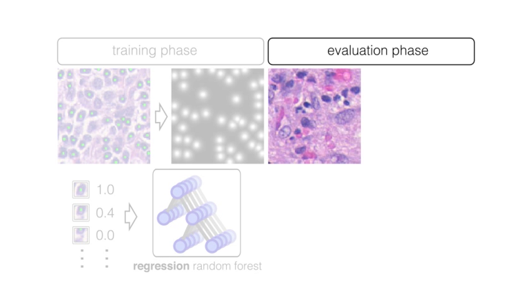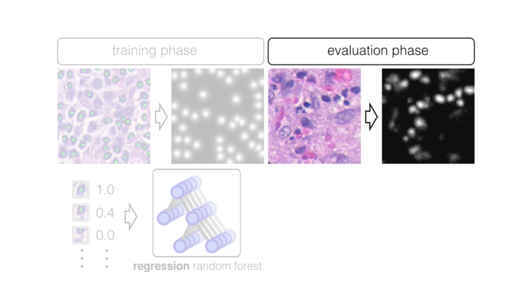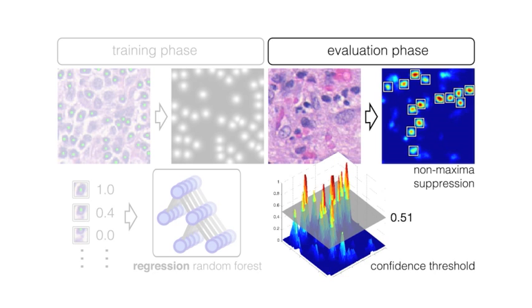In the evaluation phase, the proximity score map is predicted for unseen images using a sliding window. Subsequently, non-maxima suppression is used on the predicted map to detect the cell centers as local maxima. Maxima with low proximity score can be filtered by applying a confidence threshold.